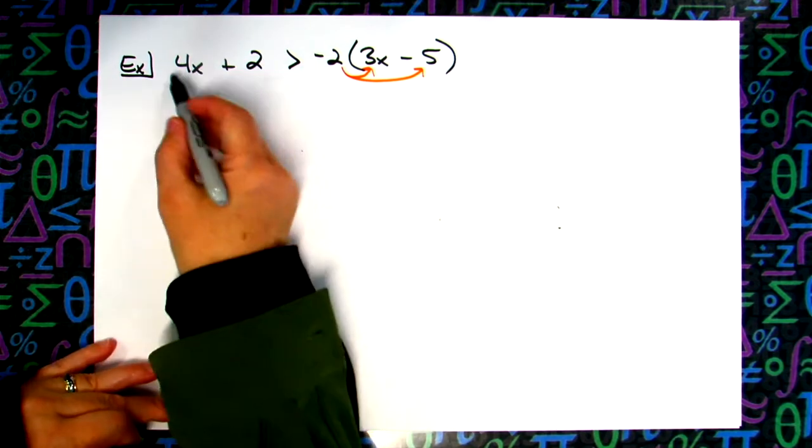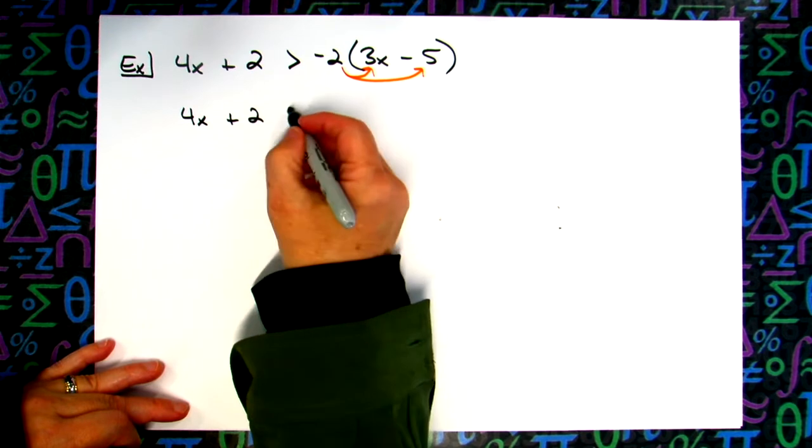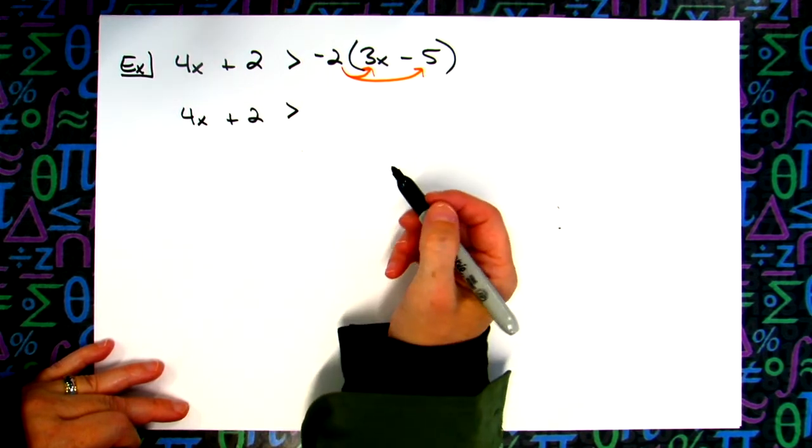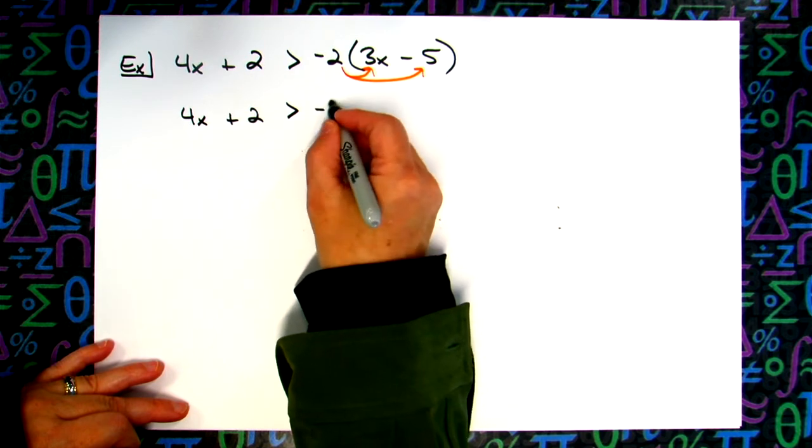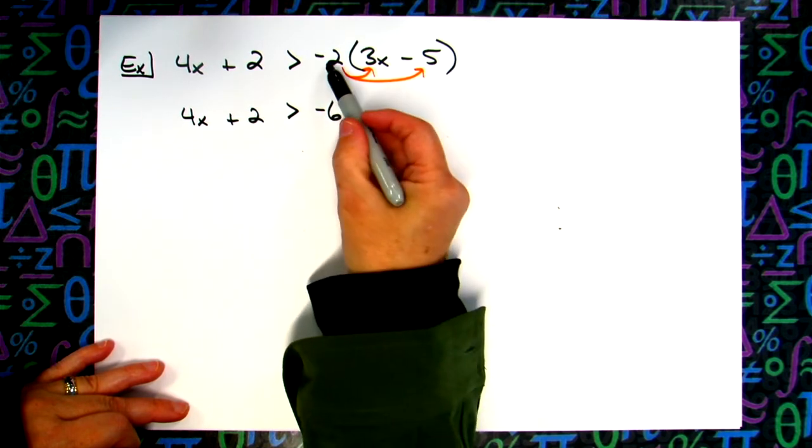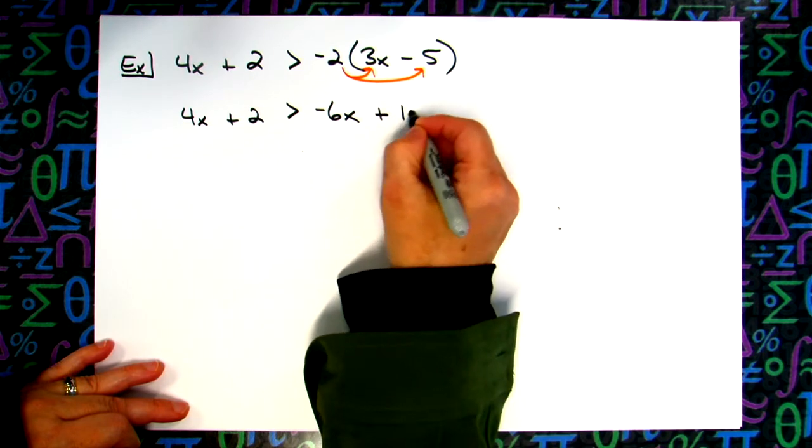I'm going to leave the 4x plus 2 alone. I'm going to leave the symbol alone for right now. Negative 2 times 3, negative 6x. Negative 2 times negative 5, positive 10.